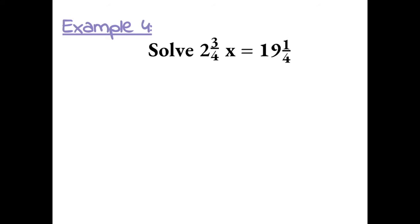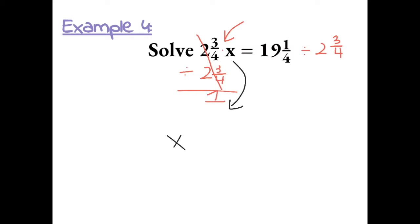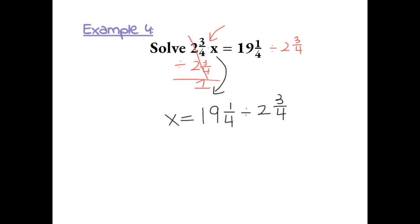Example 4: solve 2¾x equals 19¼. Since 2¾ is being multiplied by x, we need to do the inverse and divide by 2¾ on both sides. Any number divided by itself equals 1, and 1 times x leaves us with just x. So we compute 19¼ divided by 2¾. We convert to improper fractions: 19 times 4 is 76, plus 1 is 77, denominator stays 4, giving 77⁄4. For 2¾: 2 times 4 is 8, plus 3 is 11, giving 11⁄4.